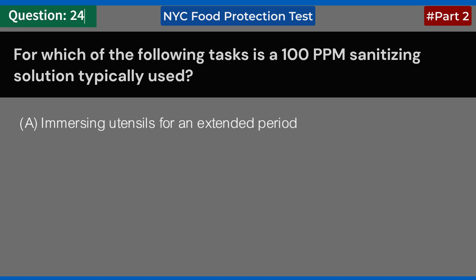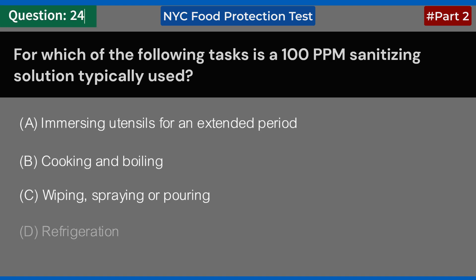For which of the following tasks is a 100 ppm sanitizing solution typically used? A. Immersing utensils for an extended period. B. Cooking and boiling. C. Wiping, spraying, or pouring. D. Refrigeration. Answer: C. Wiping, spraying, or pouring.